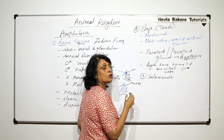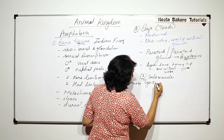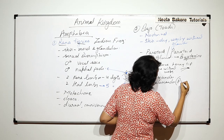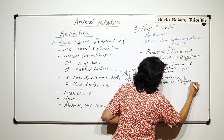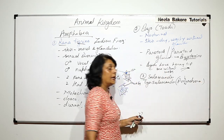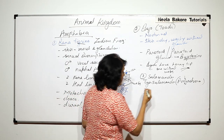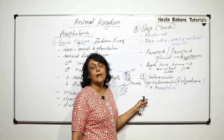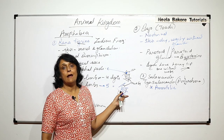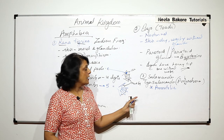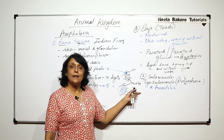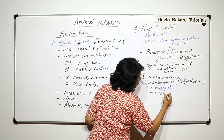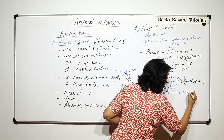The third example is the salamander — specifically the tiger salamander, whose scientific name is Ambystoma. The most important thing about salamanders is that they are ammonotelic even as adults. When discussing general characteristics, we noted that amphibian larvae are aquatic and therefore ammonotelic, but the salamander remains ammonotelic in its adult stage as well. Secondly, their larvae are axolotl larvae and they show neoteny.